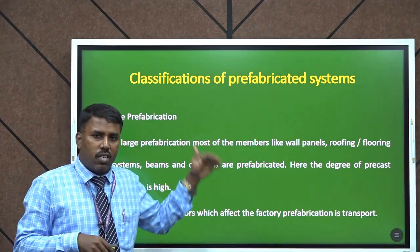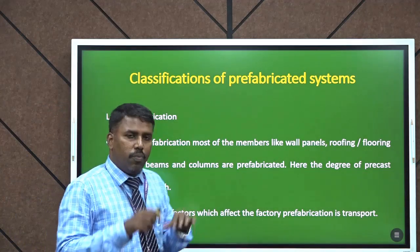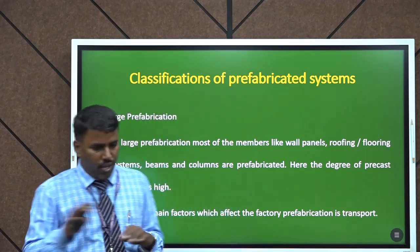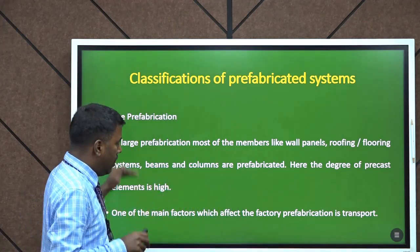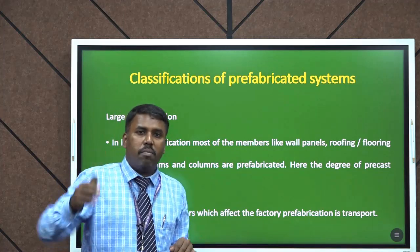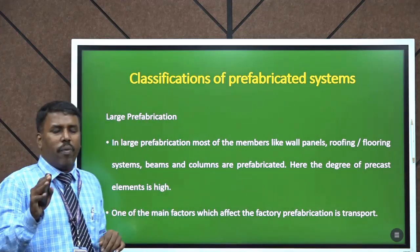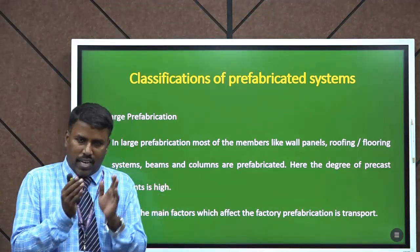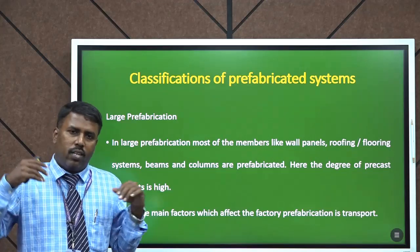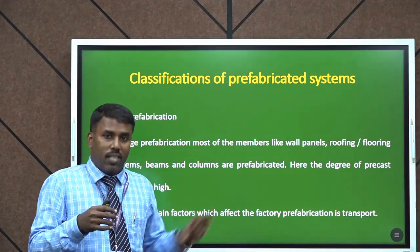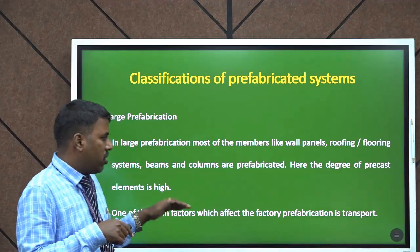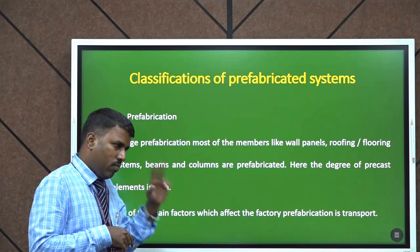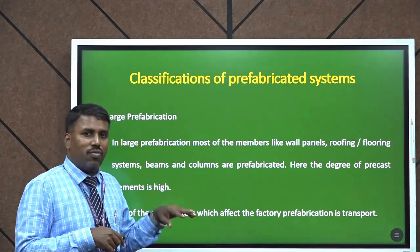The next one is large prefabrication. Here we prefabricate all the elements like walls, columns, flooring, and roofing — everything — and the degree of precast element is high. One of the main drawbacks is transportation. Casting a construction element in a factory is not a problem — we can do any kind of fabrication — but transportation is very important. The second concern is joints; we have to think about joints as well as transportation.